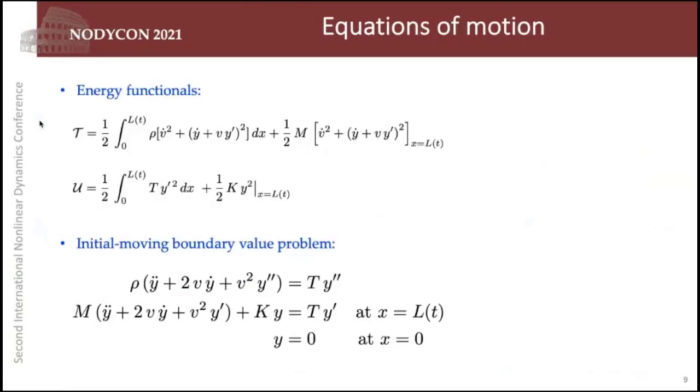For the bottom cable, the cable with variable length, we employ analytical formulation. We employ Hamilton principle to derive the model equations. You can see the energy functionals here, the kinetic energy, the potential energy. You have a distributed mass part and a lumped mass part in both functionals. You have a distributed potential energy here and a lumped potential energy here. After we employ the calculus of variation formalism, we arrive in this equation of motion, supplemented by these two boundary conditions. This is an initial boundary value problem, but not a simple one.